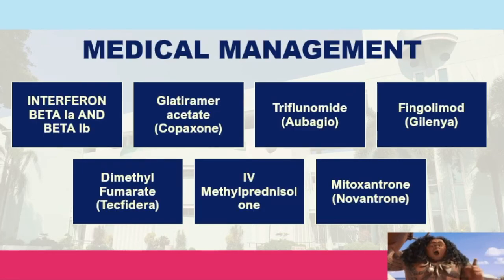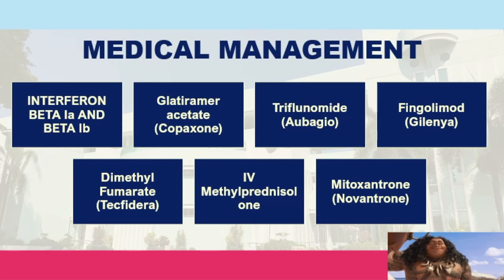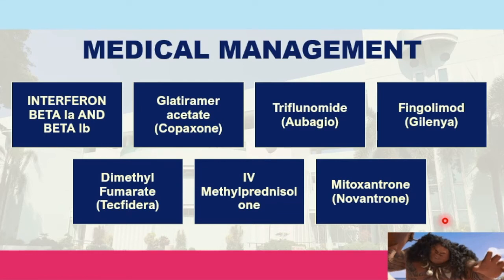Medical management for multiple sclerosis includes interferon beta-1A, interferon beta-1B, glatiramer acetate, teriflunomide, fingolimod, dimethyl fumarate, and IV methylprednisolone. Methylprednisolone is a steroid used because the problem is autoimmune in origin, meaning we want to suppress the immune system to resolve the patient's signs and symptoms.